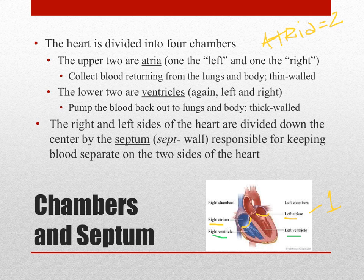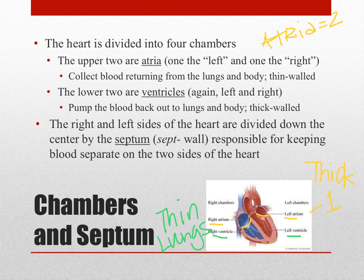The right and left sides of the heart are similar in structure but not entirely the same. The right side tends to be much thinner because it primarily delivers blood to the lungs, which are close by. The left side tends to be very thick-walled because blood is being pumped to the body, covering a lot more distance. Down the center, the two sides are divided by a thick wall called the septum, which keeps the blood on the right and left separated from one another.